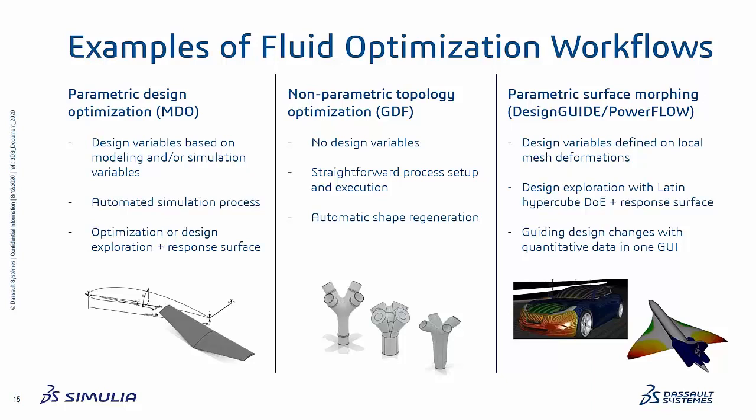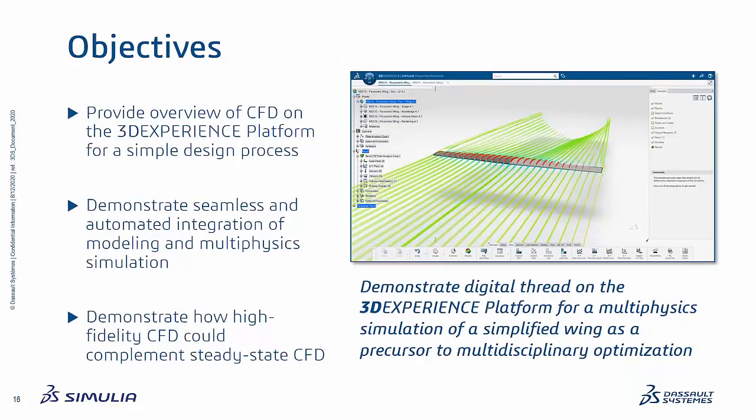These workflows enable a deeper understanding of product performance through the use of simulation. We'll spend a majority of the time on parametric design but highlight some other examples. We're going to show you a parametric design process demo, taking advantage of the digital thread on the 3DEXPERIENCE platform to perform a multi-physics simulation process of a simple parametric wing as a precursor to multidisciplinary optimization.